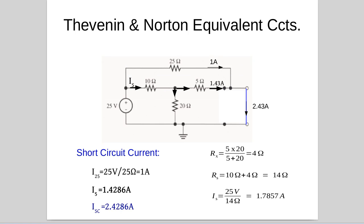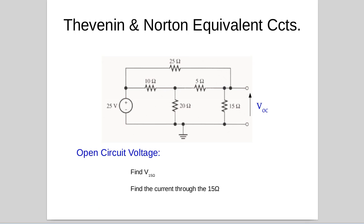So now we have those two currents, 1 amp in the 25 ohm resistor, 1.43 amps in the 5 ohm resistor and together using Kirchhoff's current law, those two will add together and hopefully give us 2.43 amps in the short circuit. So now we have our short circuit current. We look at the open circuit voltage.